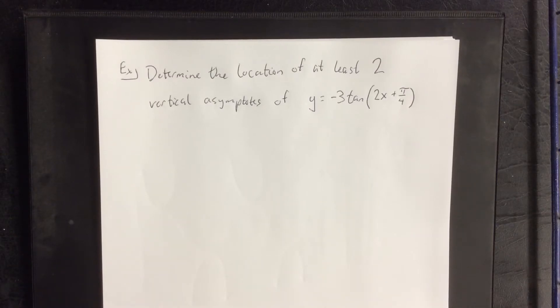A common conceptual question regarding graphs of tangent and cotangent functions will be to determine the locations of at least two of the asymptotes of it.